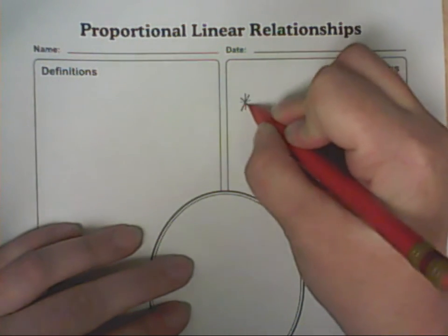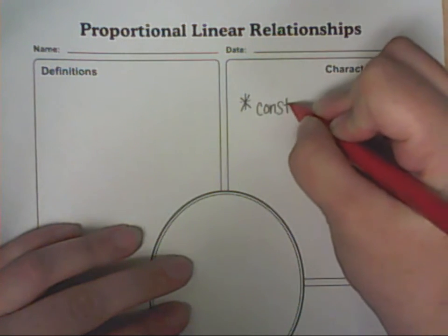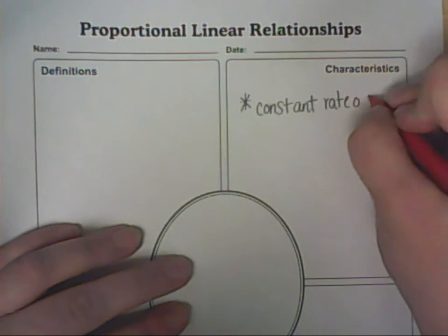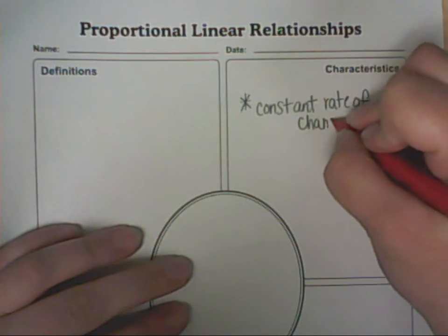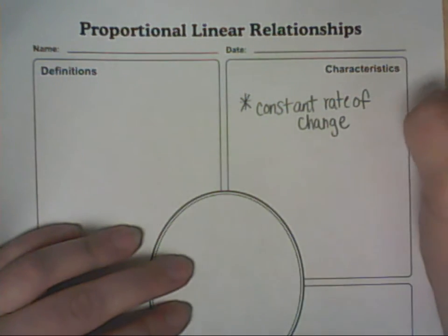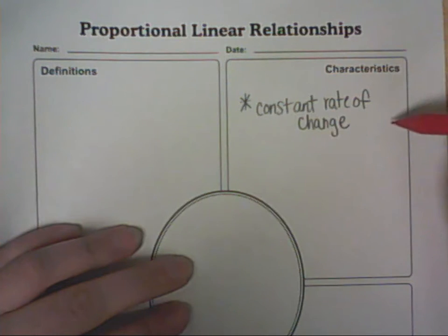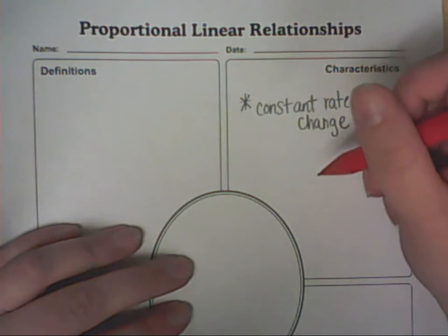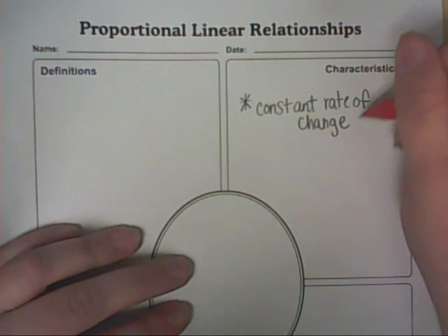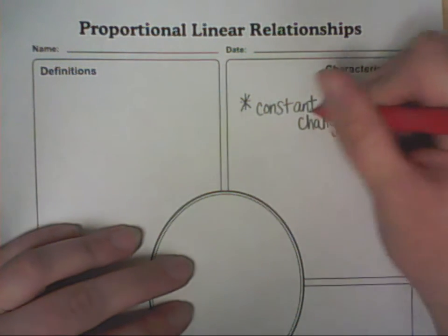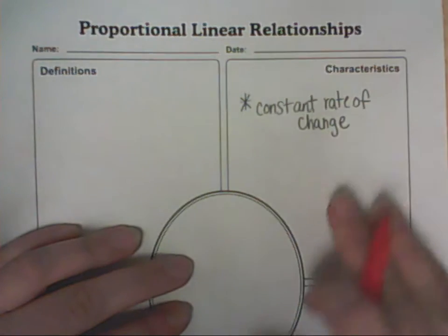We first have to determine if they have a constant rate of change. A constant rate of change is where you have times 2, times 2, times 2, and each value is increasing by a multiple of 2, or each value is increasing by a multiple of 5. Throughout the whole pattern, it has the constant — constant means the same rate.